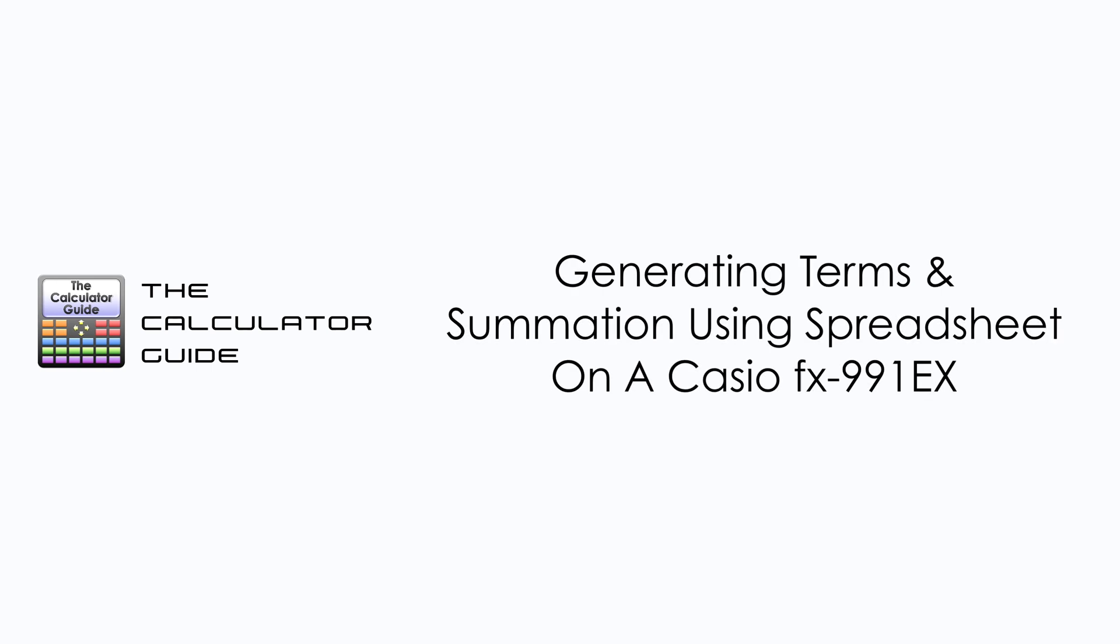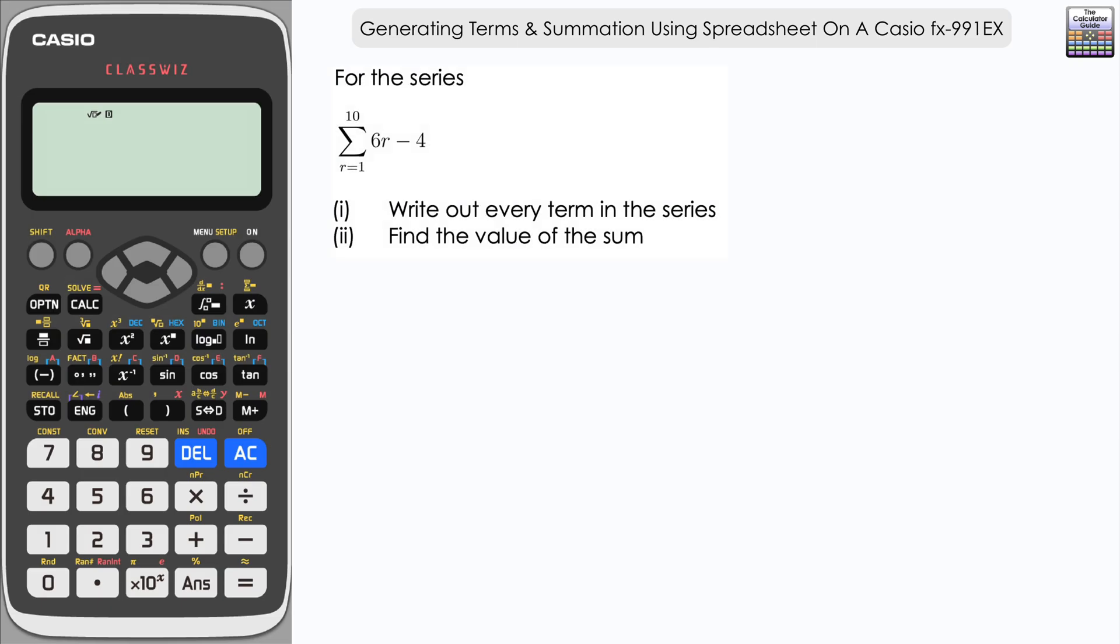Hello and welcome to the calculator guide video on generating terms and summation using spreadsheet on a Casio FX-991 EX. You are going to need spreadsheet on your calculator to be able to follow along with this video. I'm doing this on a Casio Classpad FX-991 EX, you just need to check that your calculator has the spreadsheet facility.